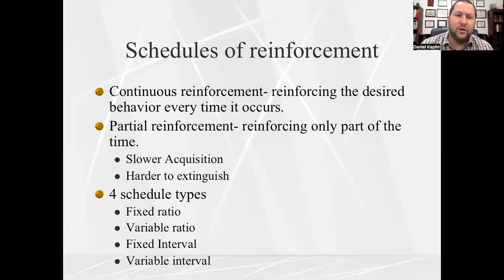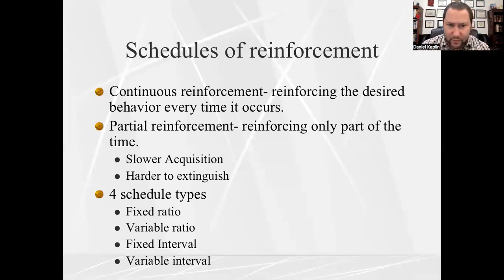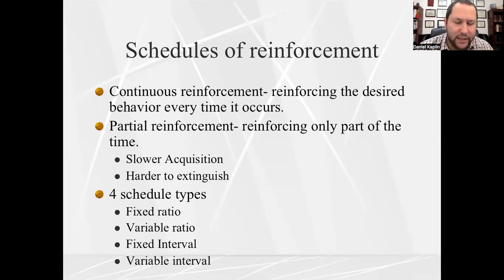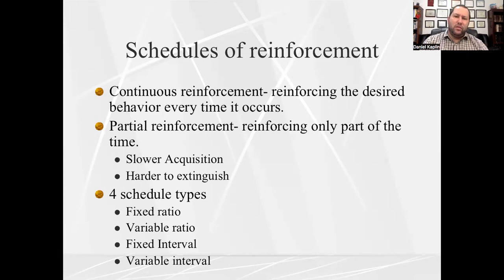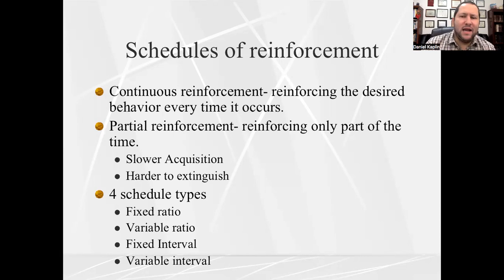There are different models. There is something called continuous reinforcement, which is a one-to-one model — for every desirable behavior, you get reinforced. For example, if you're helping me pack and move, for each box you pack I give you a dollar. It's continuous and clear. But in the real world, we rarely get continuous reinforcement.